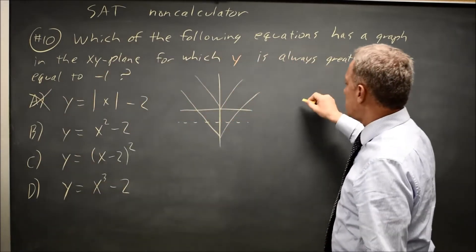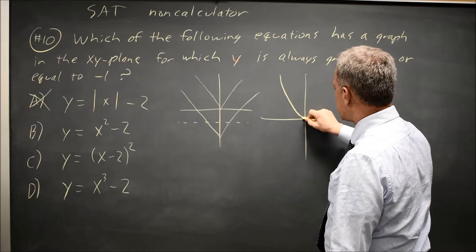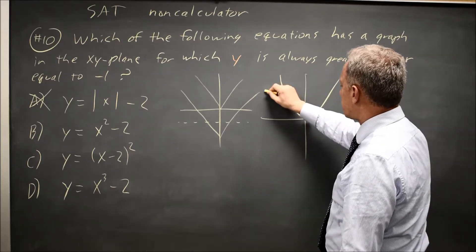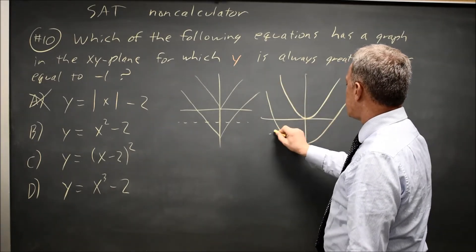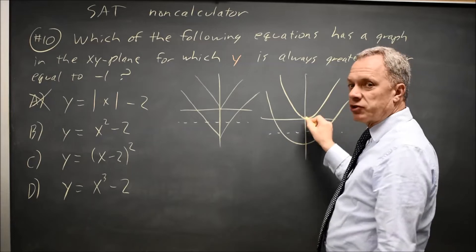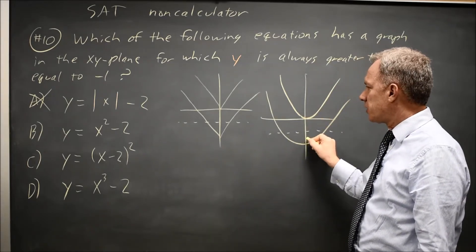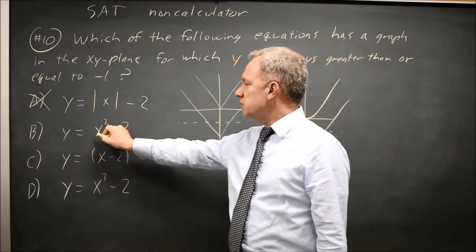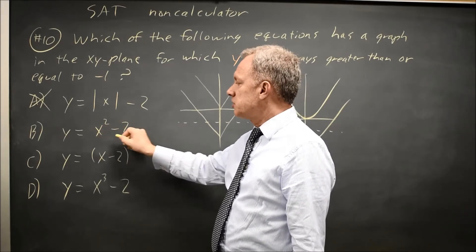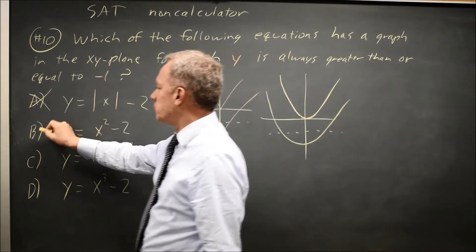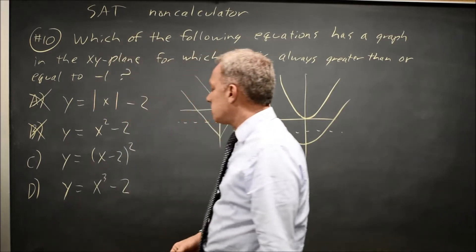Choice B is a parabola with vertex at the origin, shifted down by 2. That shifts the vertex below y equals negative 1. At x equals 0, 0 squared is 0, and 0 minus 2 is negative 2, which is less than negative 1, so this quadratic does not work.